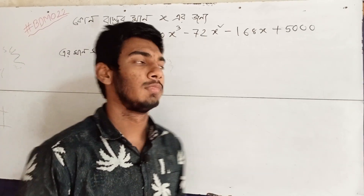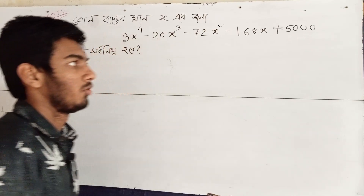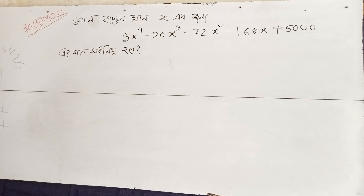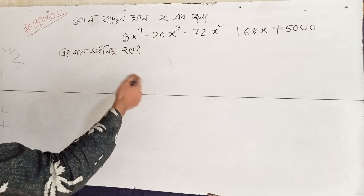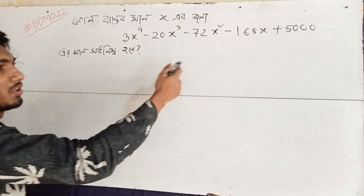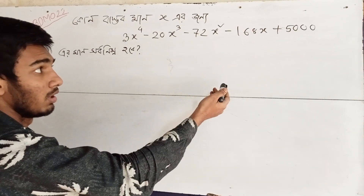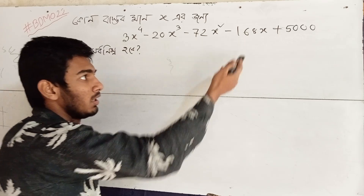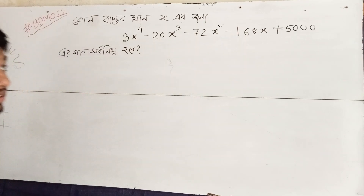As-salamu alaykum. This is the camera of 2022. We are going to talk about Divisional or Data Problems. We have the equation: 3x⁴ minus 20x³ minus 72x² minus 168x plus 5000 is equal to 0.